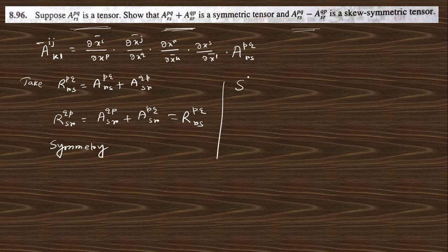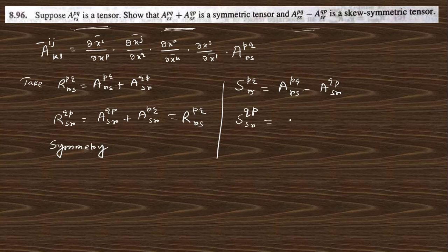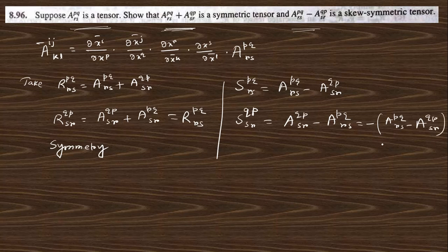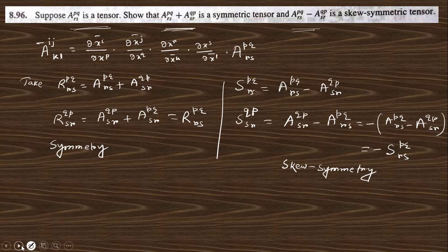Similarly, if we take another tensor S_pqrs, which is the difference A_pqrs minus A_qpsr. If you change p and q — this becomes q, this becomes p, this is s, this is r — then it becomes A_qprs minus A_pqsr. If you take the minus common, you get minus of A_pqrs minus A_qpsr, which is nothing but minus S_pqrs. So this will be skew-symmetric. If there is any doubt, you must comment in the comment box.